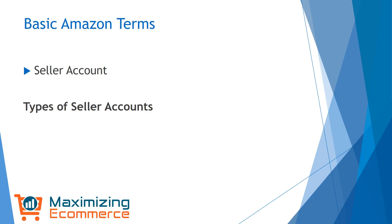There are two different types of seller accounts. First, there's an individual account. If you're considering doing this, I would say just go ahead and register as an individual seller — it costs you absolutely nothing on the front end. The only cost involved is you pay an extra 99 cents for every sale you make, and you don't even pay that 99 cents until you make a sale. So as an individual seller, you have no upfront costs and you just pay 99 cents per sale.